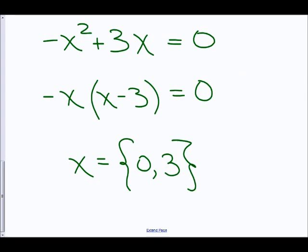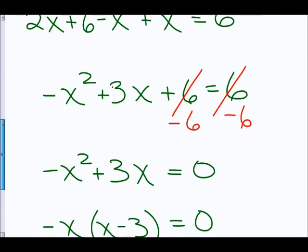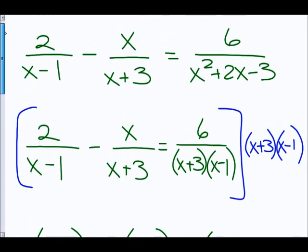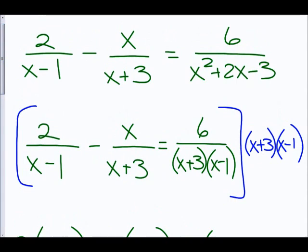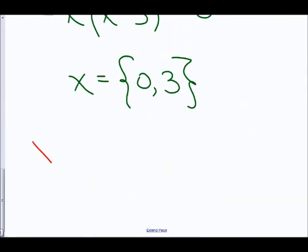However, back in the beginning of the problem, you'll notice that x can't be 1 or negative 3, because that would give us a denominator of 0. So x cannot equal positive 1 and negative 3. And of course, neither of those are my solution, and there it is.